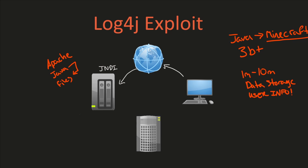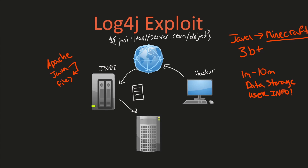So let's say a hacker sends down a string using the format: dollar sign, curly brace, then using JNDI and LDAP, they specify a server — some server.com — and specify what object they want to load. If they send this down, all of a sudden this Minecraft server would go and execute that to grab an object from another server. That piece of code then gets transferred over back to the original server.